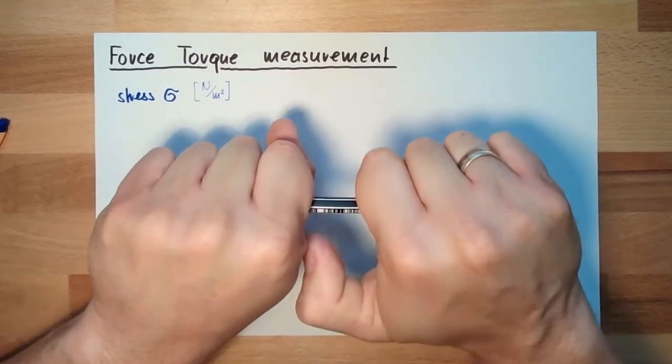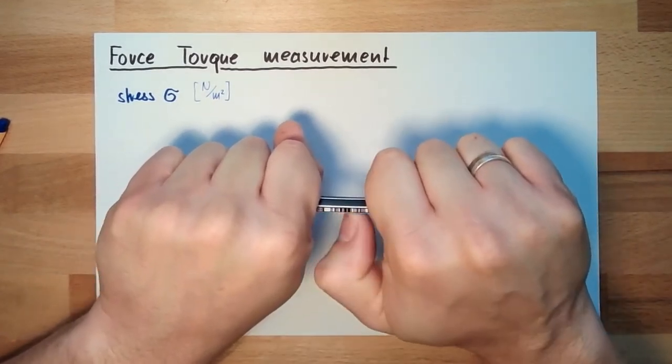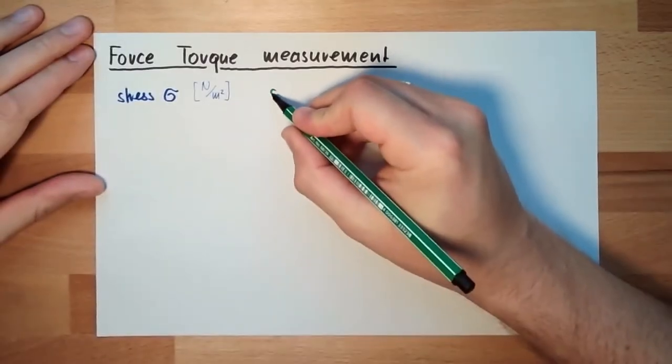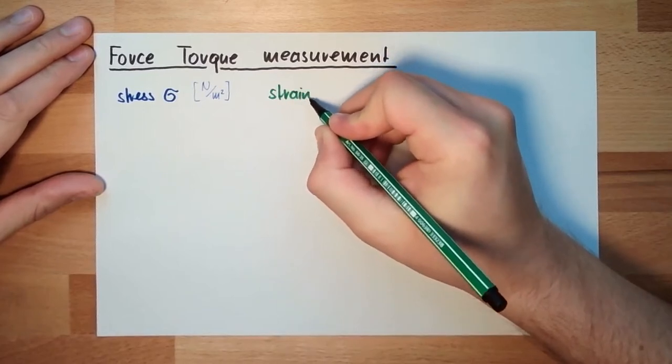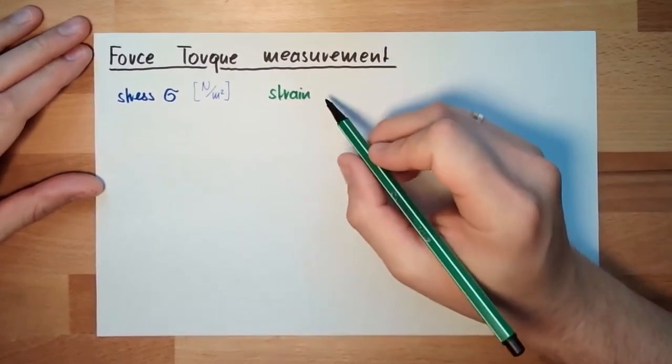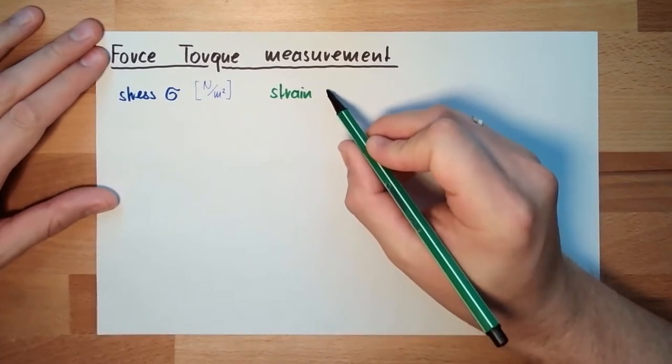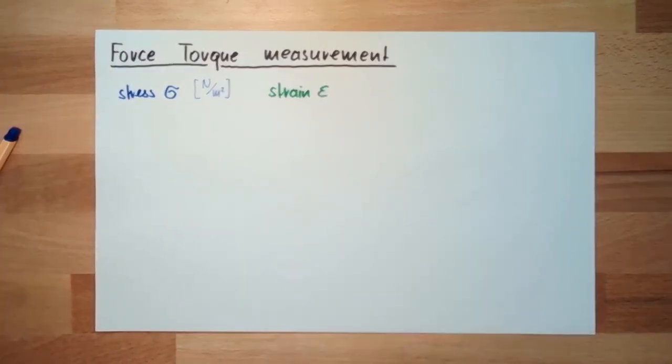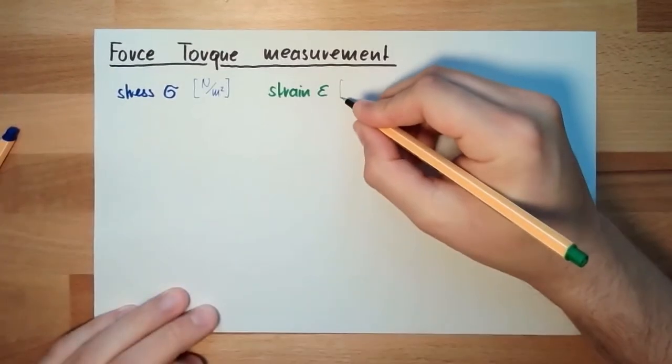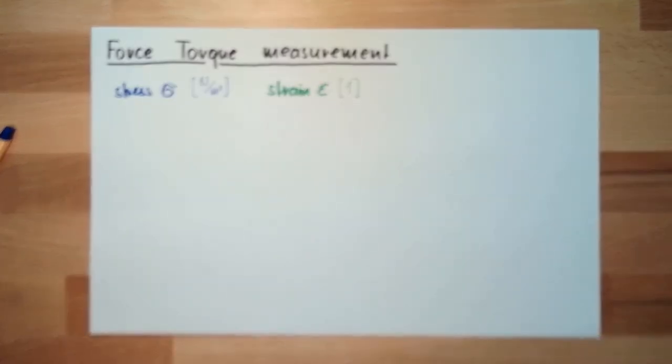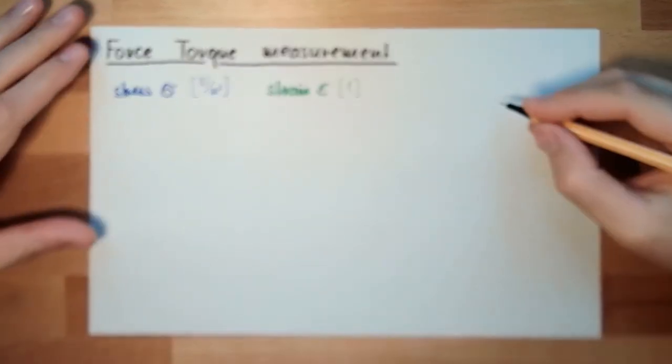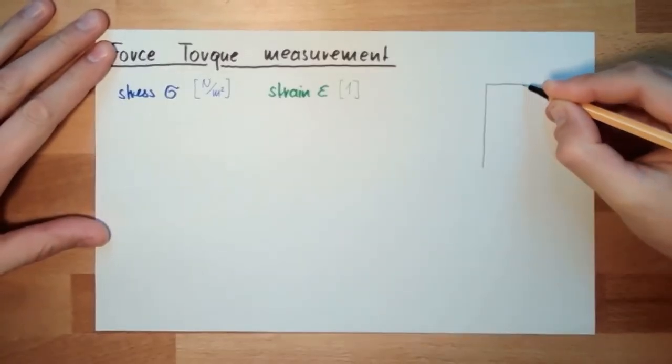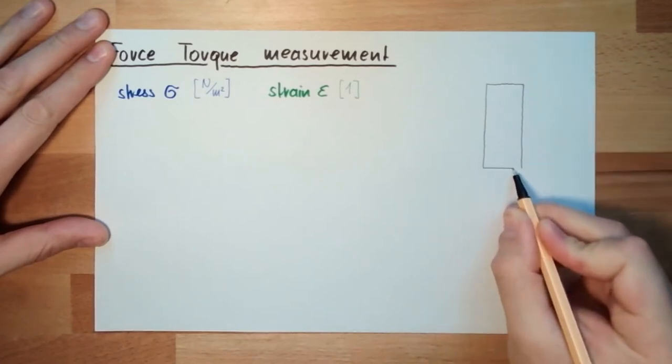So there is strain. The usual formula sign for strain is a small epsilon. And the unit, the unit is one. Why is the unit one? I will show you.